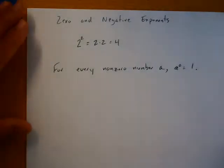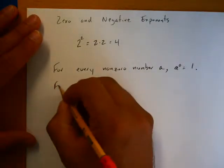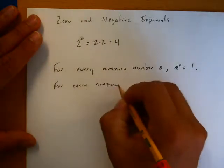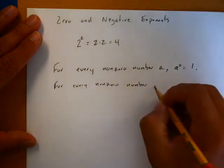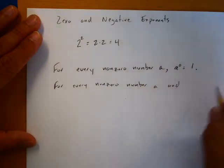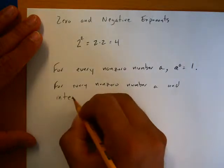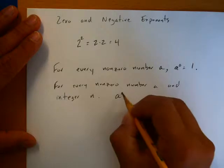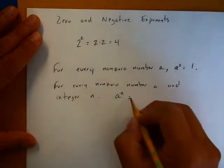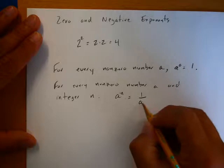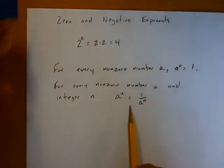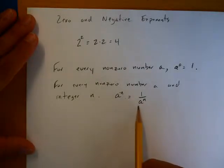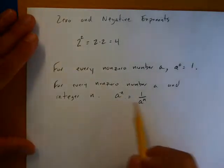For every non-zero number a, and integer n, a to the negative n is equal to one over a to the n. Now a little phrase that sometimes we like to use when we have negative exponents, it means move it and lose it, or move it and lose it.